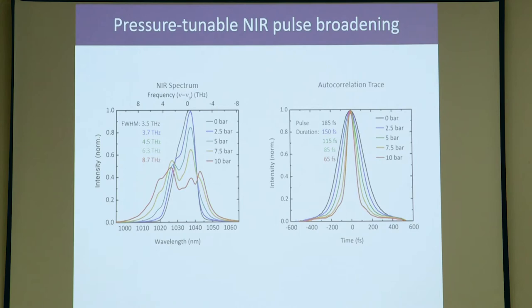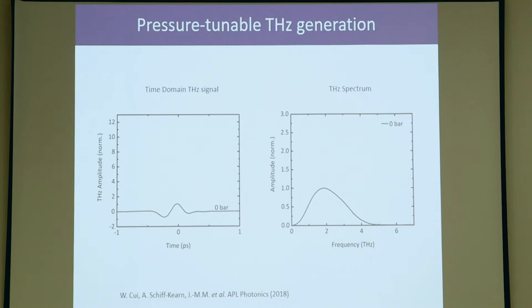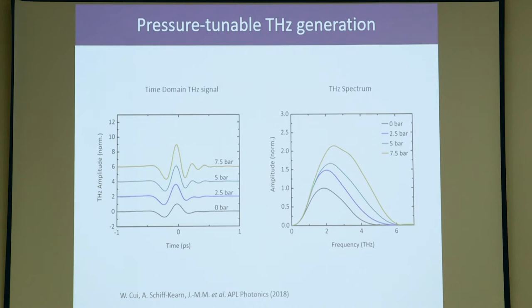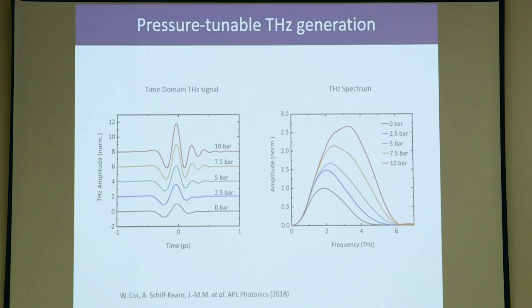This is the time-resolved terahertz signal and the associated spectrum. Initially at zero bar of pressure, I have no nonlinear effects inside the fiber. My terahertz spectrum cuts at four terahertz. But as I increase the pressure, I see at least two things happening. First, I'm generating new frequencies in the near-infrared pulse, so this results in the possibility to generate higher frequencies in the terahertz. I also noticed the generation process is more efficient because when I broaden the pulse and recompress it, the peak field of the near-infrared pulse is also higher. This is also visible in the time domain. The peak field is larger and you can see we have larger frequencies by looking at these oscillations becoming faster as we go to higher pressure.